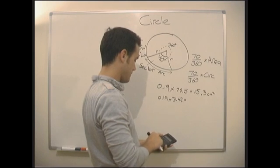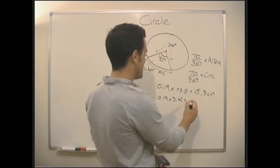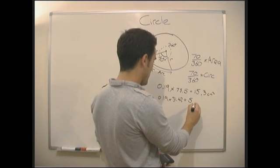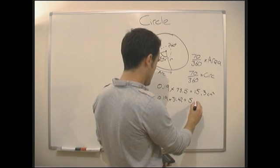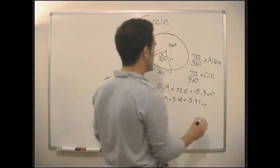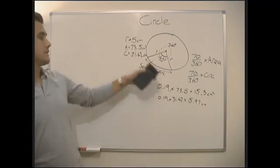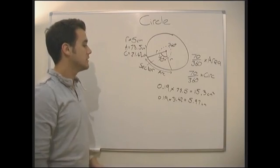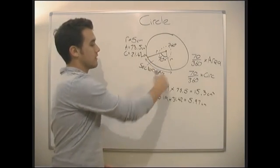Times 31.42, and that's just going to equal 5.97 centimeters. And it's that straightforward. That's how you work out the area of a sector or the length of an arc.